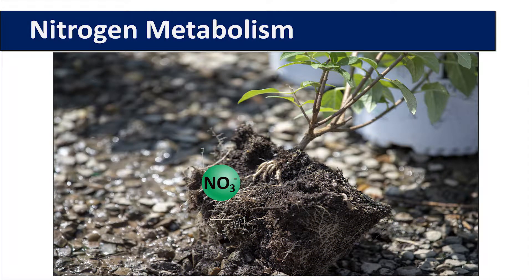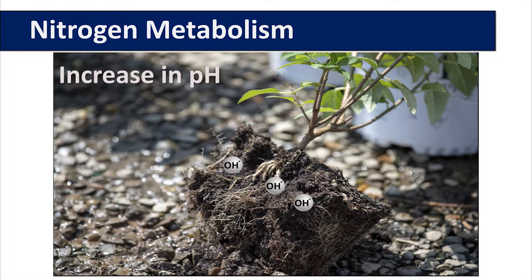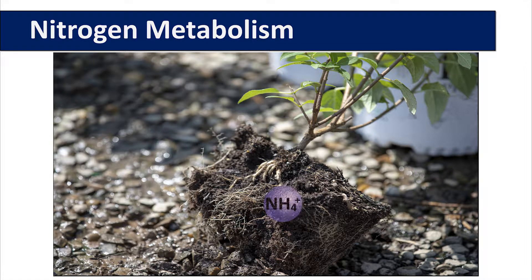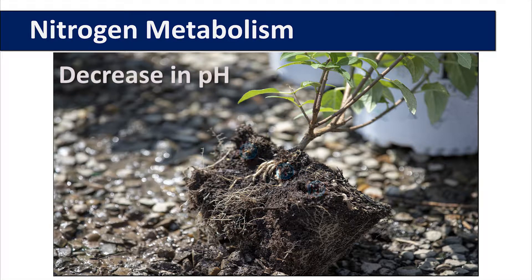Once nitrogen is taken up into the plant, it is important to realize that nitrate as the predominant nitrogen form will increase or raise the soil pH. This occurs because when nitrate is taken up, hydroxide ions must be released, resulting in an increase in pH. When ammonium is taken up into the plant, it is a positively charged ion and it will cause hydrogen ions to be released from the root system, causing a decrease in the rhizosphere pH.